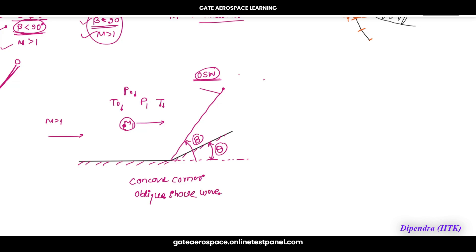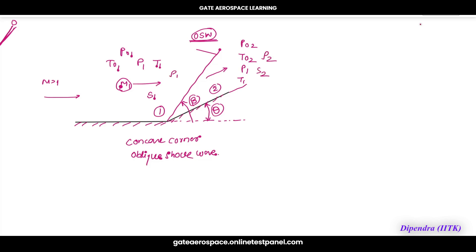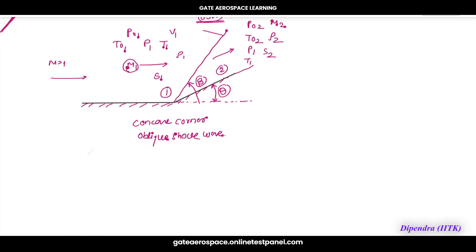This is the concave corner oblique shock setup. Now let's start analyzing the geometry. Define x and y axes. The shock wave is at angle beta from the horizontal. Flow is approaching the shock wave.